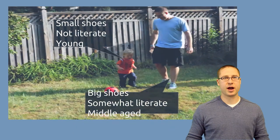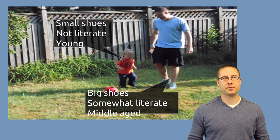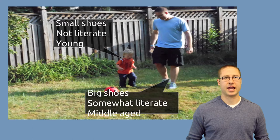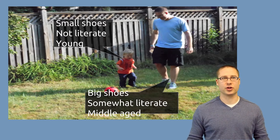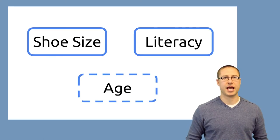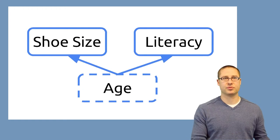The reason why we may not believe this is because there's actually one piece of data that we hadn't included in our analysis. My son is relatively young, and I'm middle-aged. It turns out that age is more closely, causally related to literacy. So if you make a plot of the relationship between shoe size, literacy, and age, you see that age is related to shoe size.